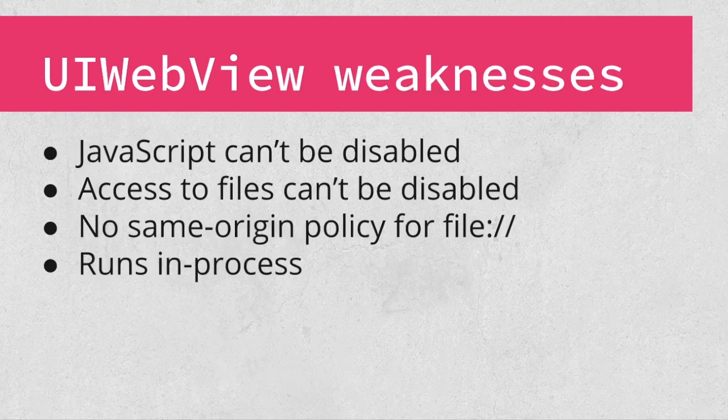UIWebView is an attractive target for exploitation due to a number of weaknesses in its security profile. By default, the configuration of a UIWebView can't be modified to disable JavaScript execution or access to local files. File origins are particularly dangerous because there is no same-origin policy applied to those URLs. UIWebView also runs in the application's process, which means that something like a memory corruption exploit would directly affect the application.